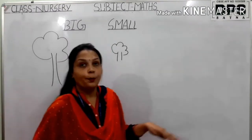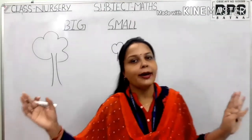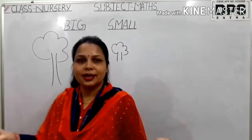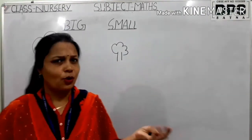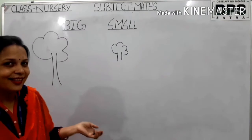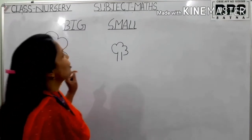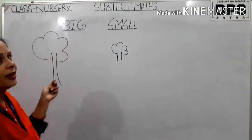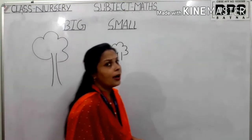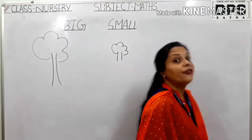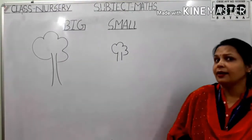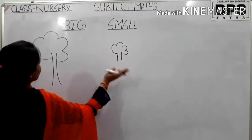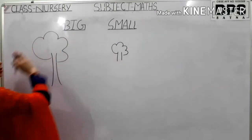You say, 'Mama, I want a big chocolate, big ice cream.' You always want big things. And if something is big and you say it looks small, then you don't look good. Right? So I have told you — let's see big and small. This is big, and this one is small.